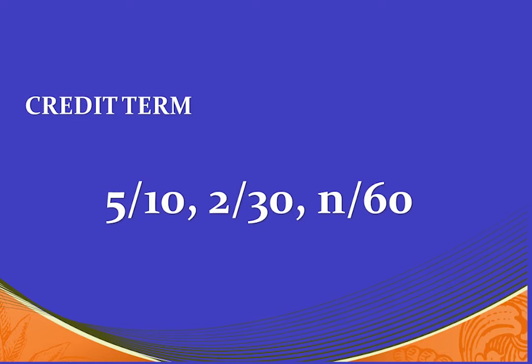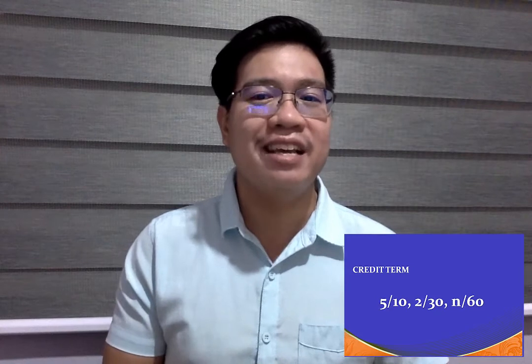This is an example of a credit term. It is read as 5/10, 2/30, net 60. The 5/10 means a 5% cash discount rate may be applied if the bill is paid within 10 days of the invoice date. The 2/30 means a 2% cash discount is allowed if the bill is paid during the 11th through 59th days. The net 60 means the full amount of the bill is due within 60 days. After the 60th day, the bill is overdue and the buyer may have to pay interest charges or late fees.